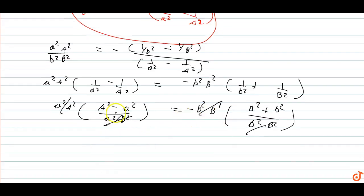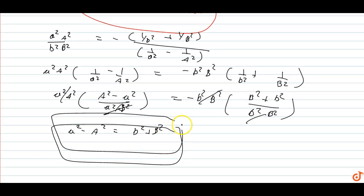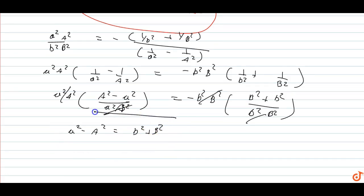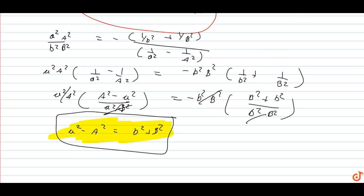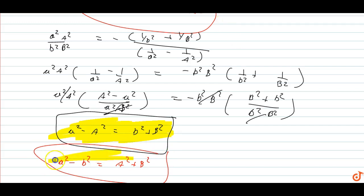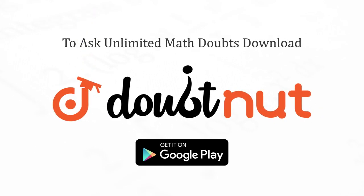So the final condition for the two curves to intersect orthogonally is: small a-square minus capital A-square equals small b-square plus capital B-square, which can also be written as small a-square plus small b-square equals capital A-square plus capital B-square.